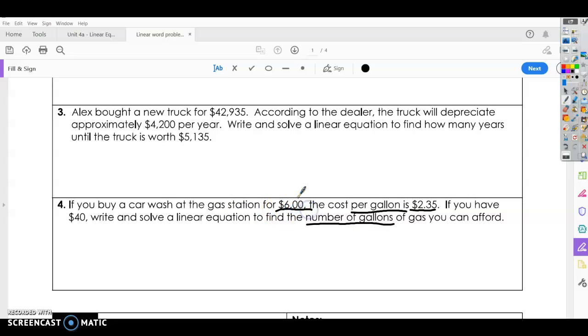So we're going to start with $6. So we're looking for our slope and our y-intercept. If we know we're going to pay $6, we know we're already going to spend $6. That's our starting point, and we know each gallon of gas costs $2.35.